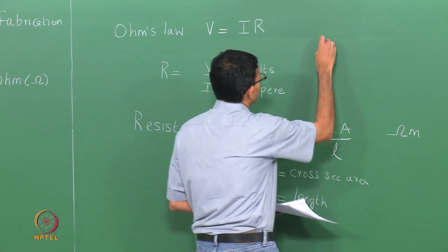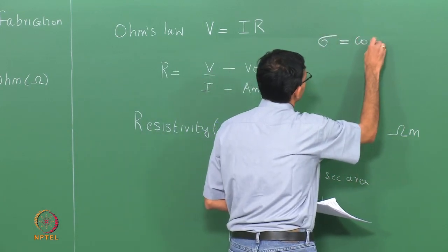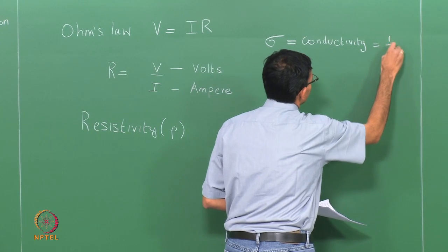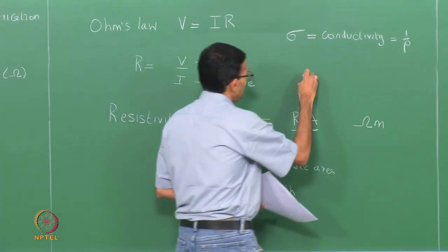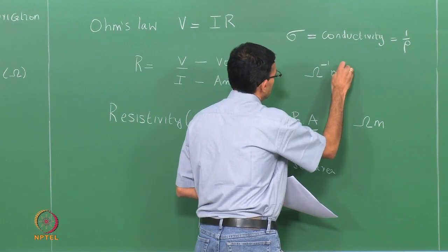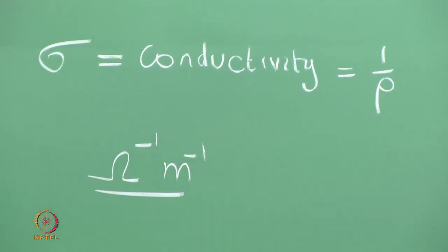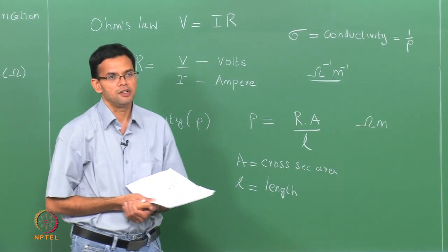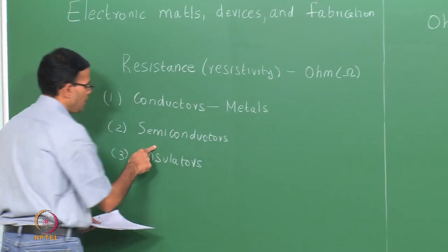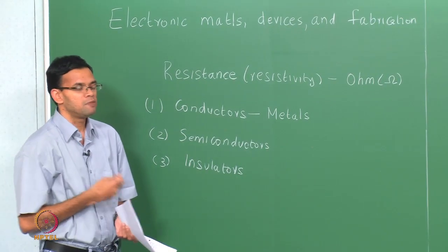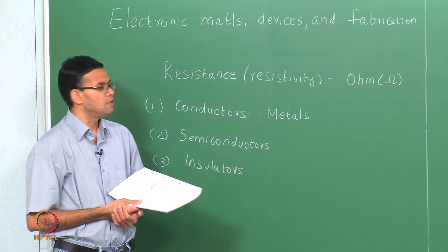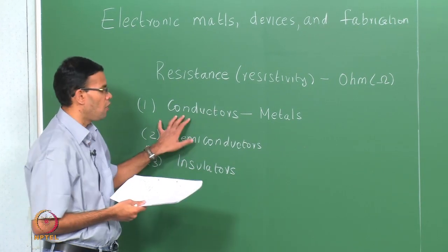One over the resistivity is called conductivity, with units of ohm⁻¹·m⁻¹. So we have introduced two concepts: resistivity and conductivity. We have three types of materials — conductors, semiconductors, and insulators — and the difference between them is due to differences in resistivity values. Let us look at some typical resistivity values for all three types.